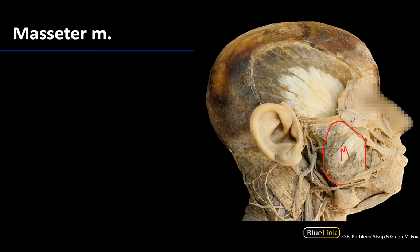The masseter has superior or proximal attachments to the inferior margin of the zygomatic bone, as well as the zygomatic arch, and even some attachments onto the maxillary bones. Its distal or inferior attachments are on the mandible, spreading across the lateral body, the entirety of the superficial ramus, and into the angle of the mandible.